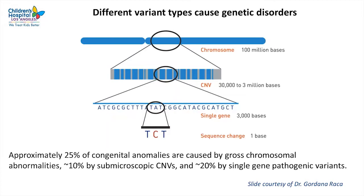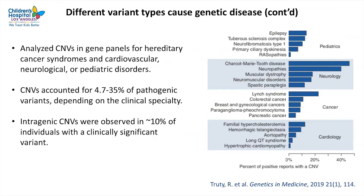Using congenital anomalies as an example, approximately 25% are caused by gross chromosomal abnormalities, 10% by sub-microscopic copy number variants, and approximately 20% by single gene pathogenic variants. There is also a group of disorders caused by intragenic copy number variants, which is often missed by routine clinical testing. In one paper, the group analyzed copy number variants in gene panels for hereditary cancer syndromes and cardiovascular, neurological, or pediatric disorders. Copy number variants accounted for 4.7 to 35% of pathogenic variants depending on clinical specialty, and overall intragenic CNVs were observed in approximately 10% of individuals with a clinically significant result.